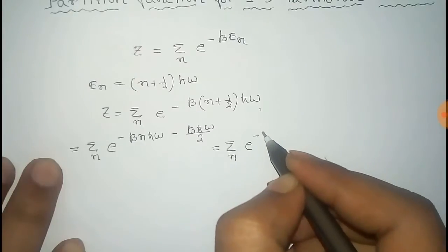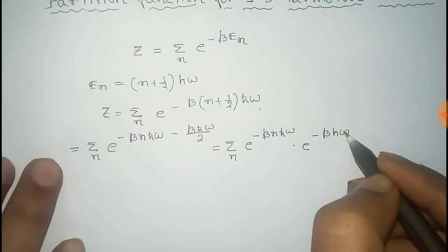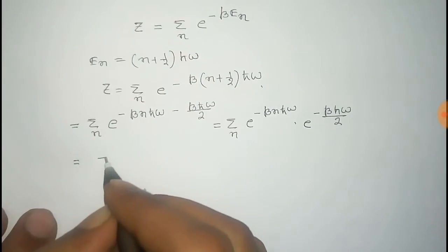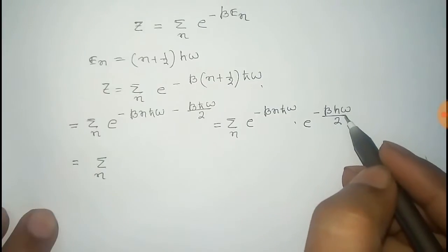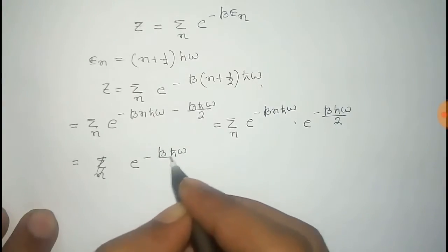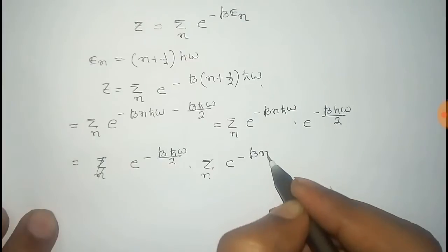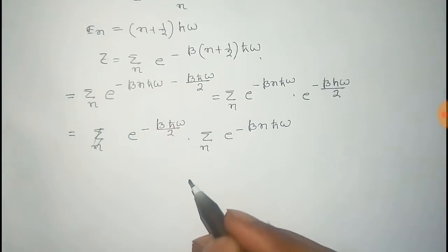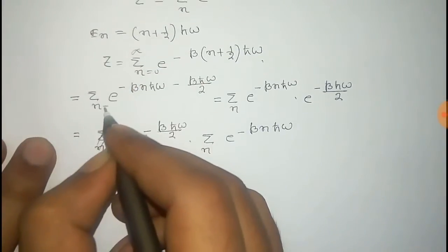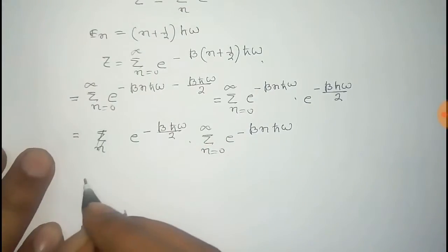That is equal to sum over n of e to the power minus beta n h-bar omega, multiplied by the exponential minus beta h-bar omega over 2. You can see that the second factor has no n in it, so we can take it out of the summation. The limit of n runs from 0 to infinity.